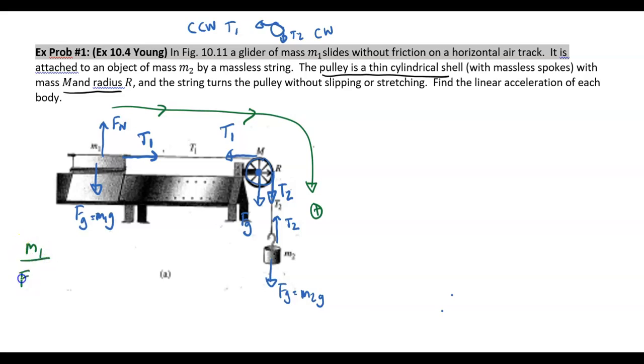For M1, if we set up F net X, that is just going to be equal to tension 1. That's the only thing acting on it. So F net is just going to be mass 1 times acceleration. It's going to be tension 1.